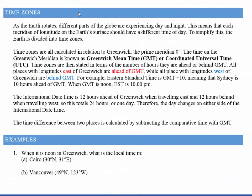Now that we've done our work on longitude time differences, I wanted to talk about time zones. As the earth rotates, different parts of the globe experience day and night. To simplify this, the earth is divided into time zones. The prime meridian at Greenwich is the Greenwich Mean Time, now renamed Coordinated Universal Time or UTC. Time zones are stated in the number of hours they are ahead or behind Greenwich meridian time.